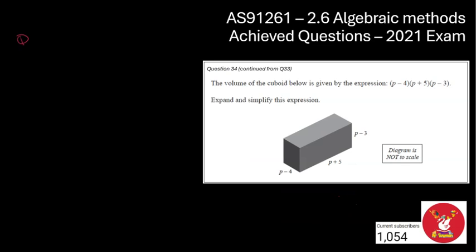And now on to question number 34 from that website link. So there's 34, similar to the cuboid one before, but basically we've got the volume of the cuboid is shown by this expression. We've been asked to expand and simplify this expression. So basically this is just expand triple brackets.